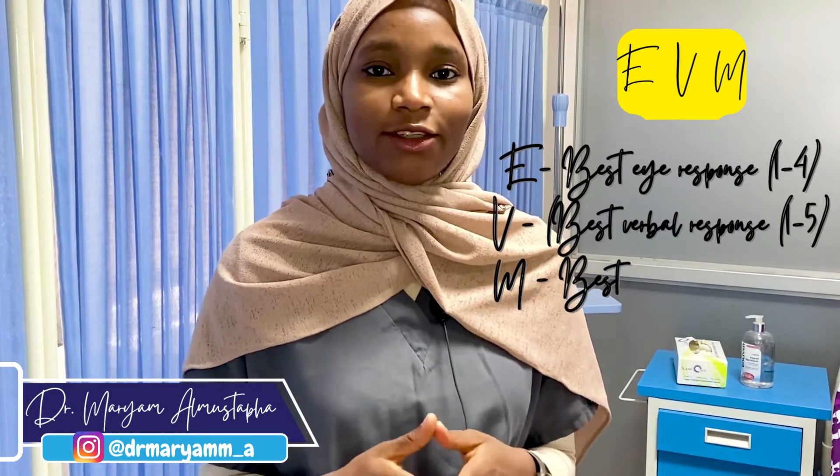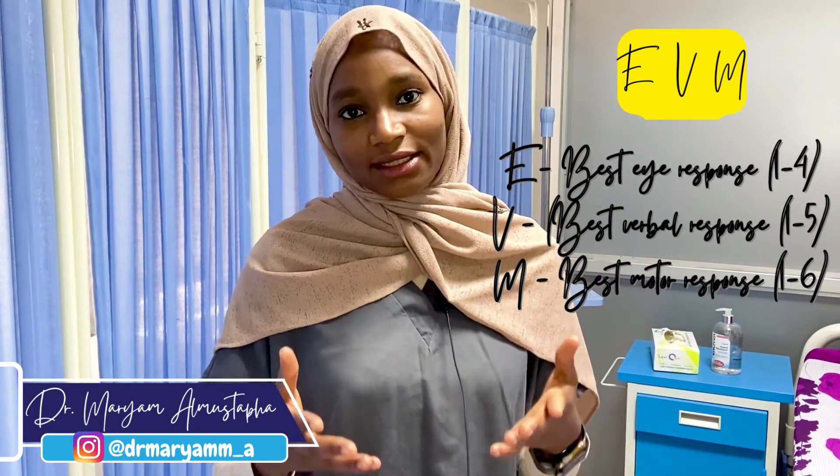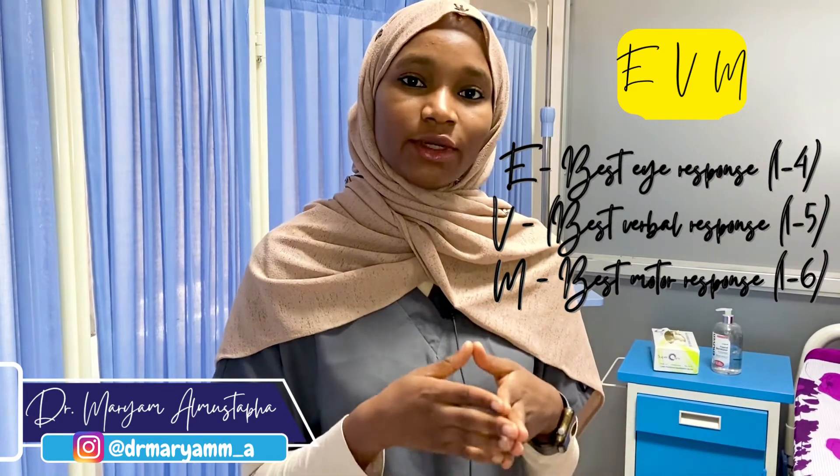The GCS is a score with three components which can be summarized as EVM456. E stands for best eye response, graded from 1 to 4. V stands for best verbal response, graded from 1 to 5. And M stands for best motor response, graded from 1 to 6. That means the highest score one can get on a GCS is 15, while the lowest is 3, because the lowest grading for each component is 1, not 0. So look out for that because that can be a trick question.